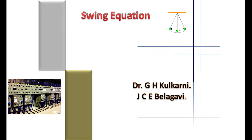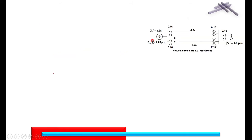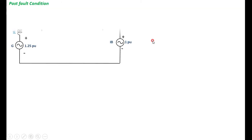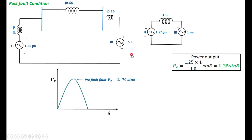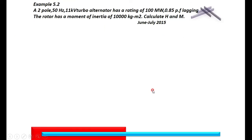Continuing with the numerical problems on the Swing equation. We have seen this in class sessions 5.1 and 5.2, and we just made a correction. It is the pre-fault power angle equation curve, and the post-fault power angle characteristics.